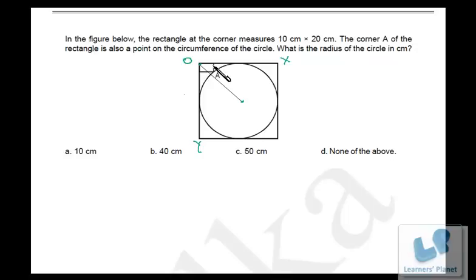Now if this length is 20, that means this length is also 20 because it is a rectangle, so x coordinate of this point will be 20. If this length is 10, then this length will be 10, so y coordinate of this will be 10.